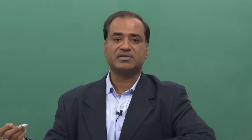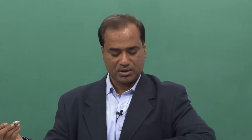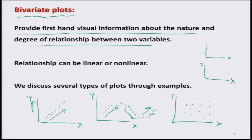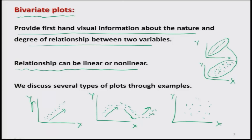Bivariate plots provide first-hand visual information about the nature and degree of relationship between two variables. By degree, for example, comparing two datasets on the same scale: one may show values very close to a line, indicating a higher degree of linear relationship, while the other shows a lower degree. These relationships can be linear or non-linear.